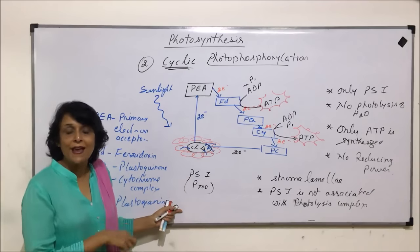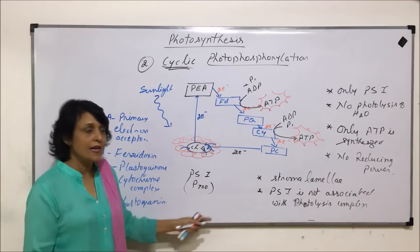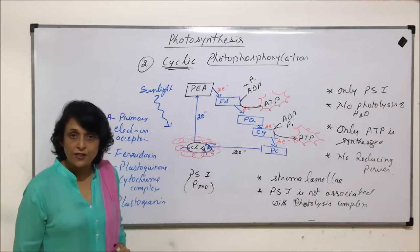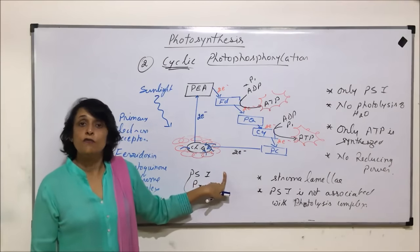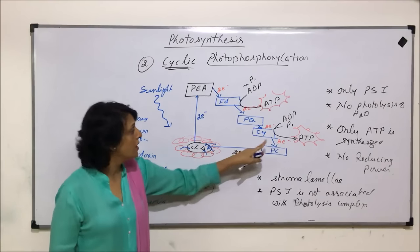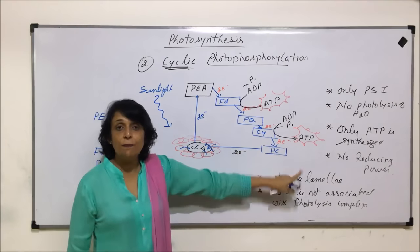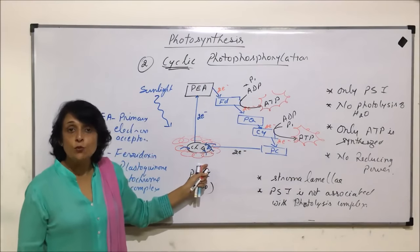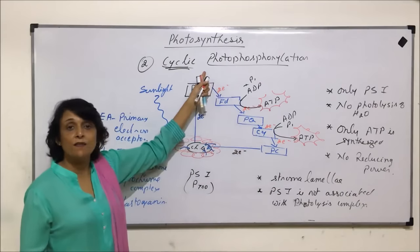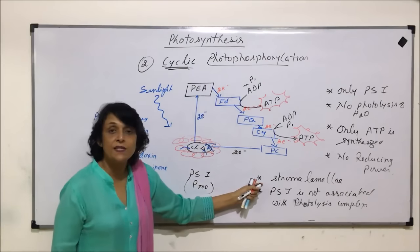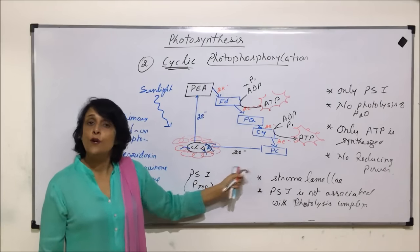And that is why water splits there, the electron pair which is released is given to that reaction center chlorophyll. So, this is cyclic photophosphorylation, gives us only ATP, no reducing power. And PS1 is associated with stromalamellae. So, this pathway predominantly takes place in the membrane of stromalamellae.